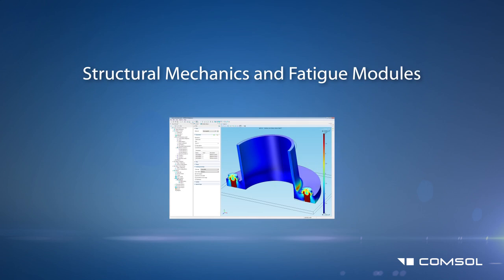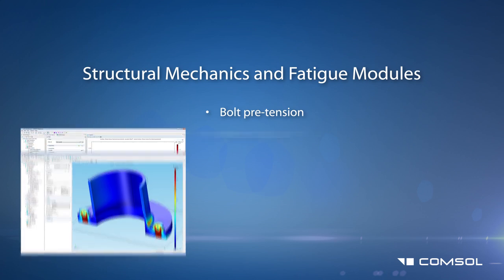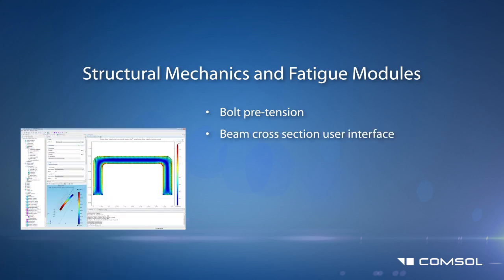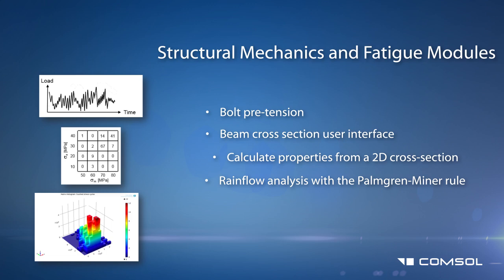The Structural Mechanics module now includes a feature that lets you account for pre-stressed bolts, as well as an interface for beam cross-sections where properties such as moments of inertia, torsional rigidity, and section modulus can be calculated from an arbitrary shaped 2D cross-section. Rainflow analysis with the Palmgren-Miner rule has been added to the Fatigue module, allowing for fatigue evaluations caused by variable or random amplitude loads.